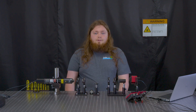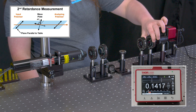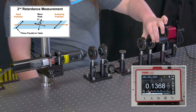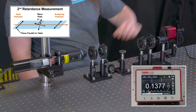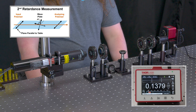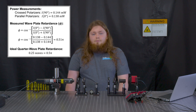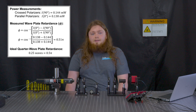Since the two polarizers are already crossed, we can record the current power. Then I'll rotate the analyzing polarizer 90 degrees back to the horizontal position, and we can record the second power. With these two power measurements, we can calculate the retardance of the wave plate. Note that the wave plate does not have the ideal quarter wave retardance, so when we measure Stokes parameters of our light inputs to the polarimeter, we'll use this measured retardance.